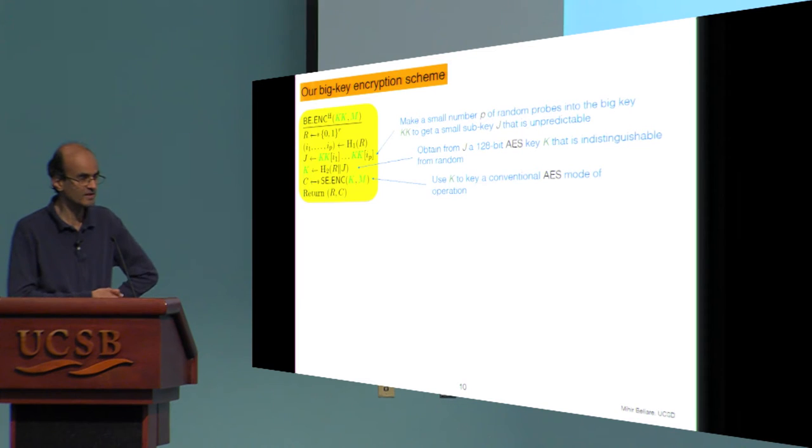So what's a probe? It's just you're poking your finger into the big key. It's an index between one and the length of the key and we have p such indices. Those indices specify bits of the big key and we collect up all those bits and we call them J and that's our first pre-key. That will have some level of security, in particular it will be unpredictable, but not pseudorandom. By applying a random oracle to it and R, we get something that looks pseudorandom.